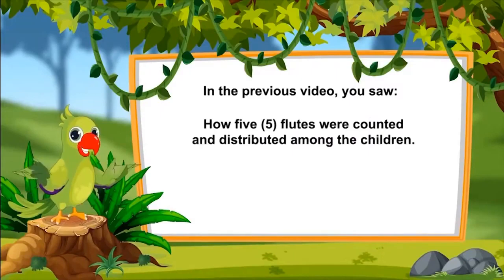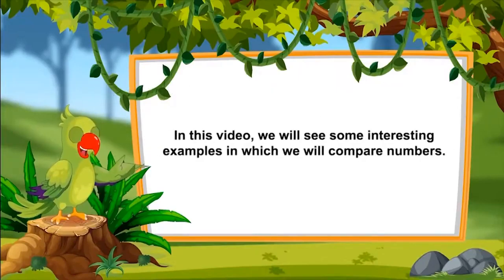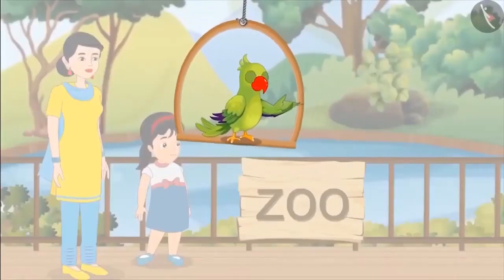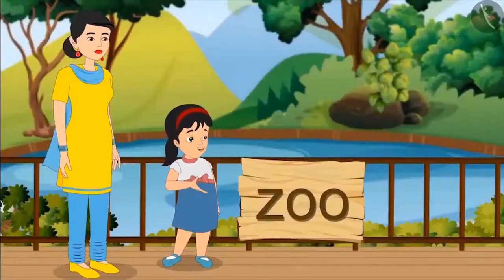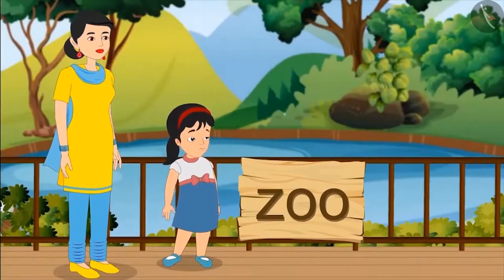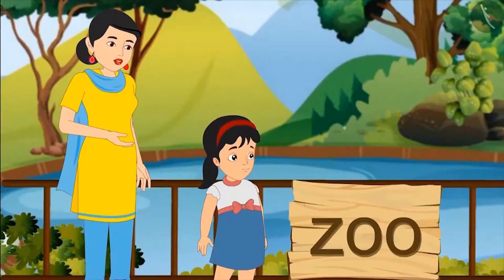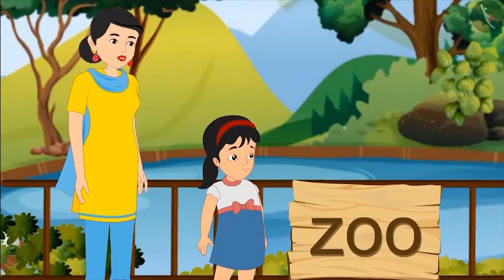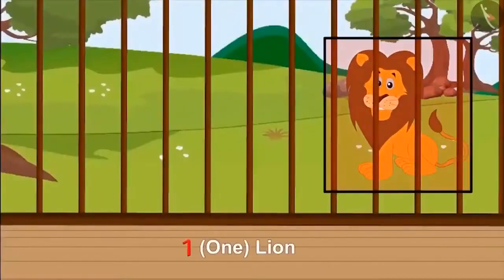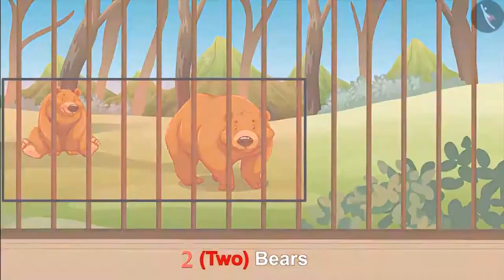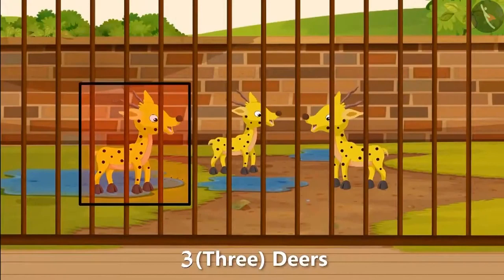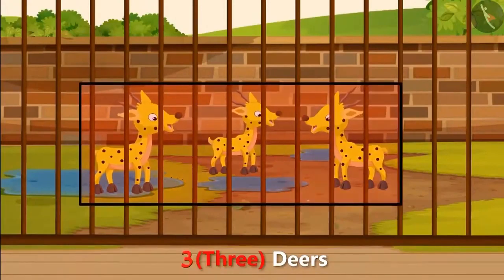5 flutes were counted and distributed among the children. In this video we will see some interesting examples in which we will compare numbers. Today Pinkie has gone to the zoo with her mother. There are so many different types of animals! A zookeeper explains: there is 1 lion in that paddock, 2 bears in another, and 3 deers in the next paddock.